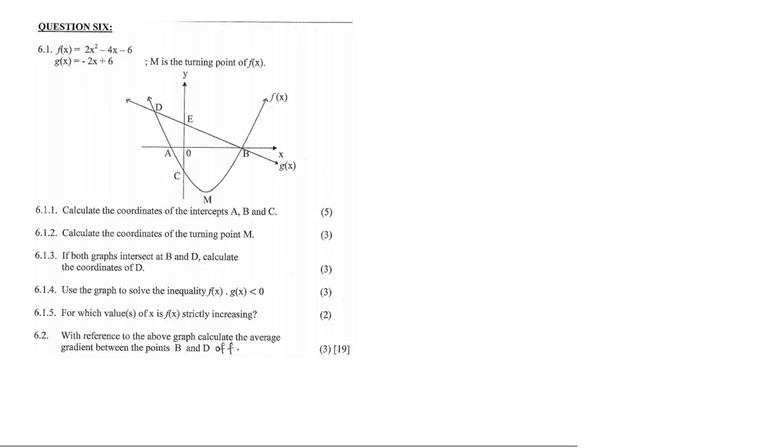In this question we are given a parabola and they've given us the equation and a straight line, and we have the turning point which is M. The first question says calculate the coordinates of A, B, and C.